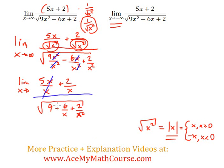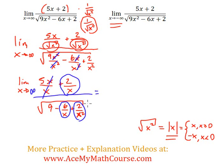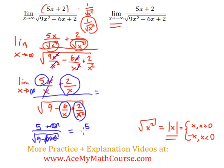Now, as x approaches infinity, the term 2 over x squared will approach 0, and so will 6 over x. So we're left with 5 plus 0 over the square root of 9 minus 0 plus 0. The answer is 5 over the square root of 9, which is 3. So the limit is 5/3 — that's the value of the first limit.